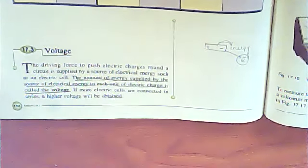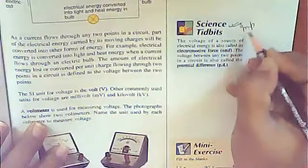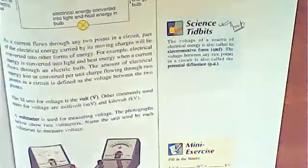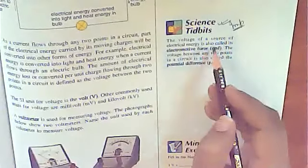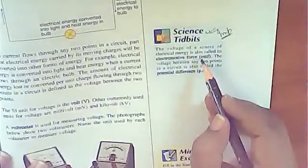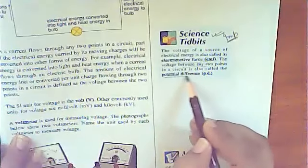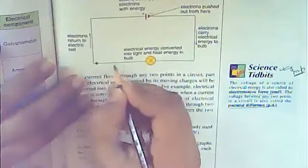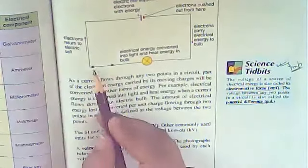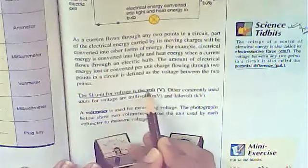This is the definition of voltage. An important statement: the voltage of a source of electrical energy is called its electromotive force (EMF). Similarly, the voltage between any two points in a circuit is called the potential difference. Obviously the voltage at two different points in a circuit will be different, and the difference in those two voltages is called the potential difference.